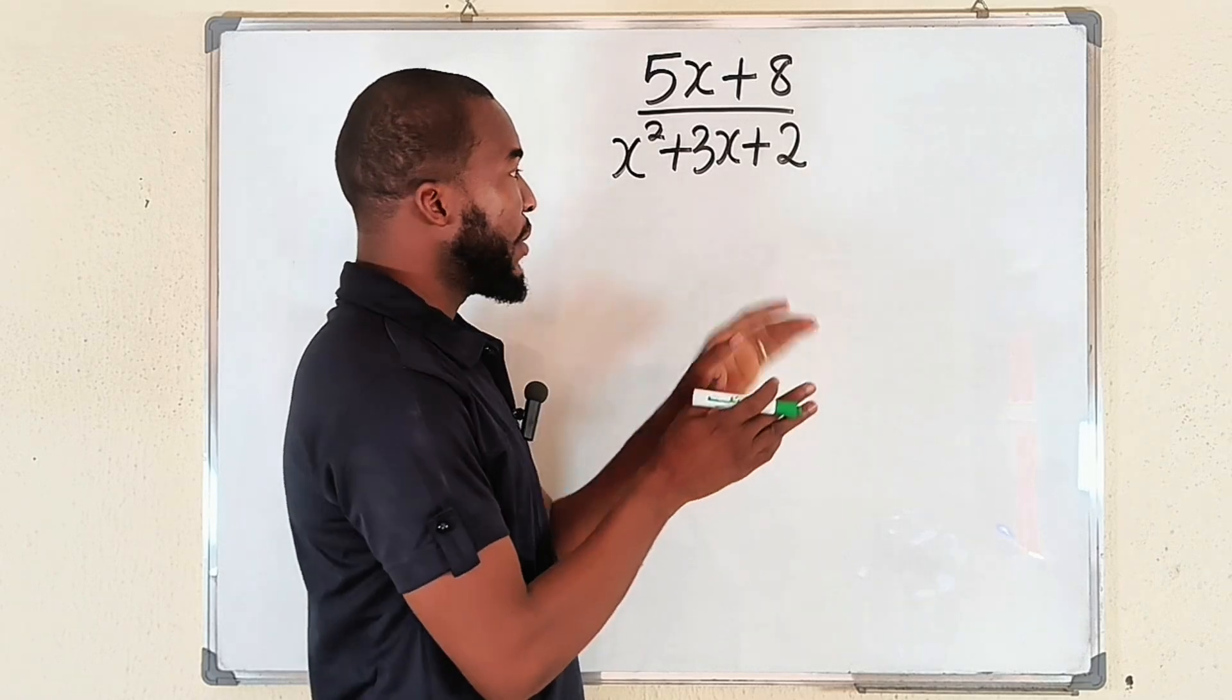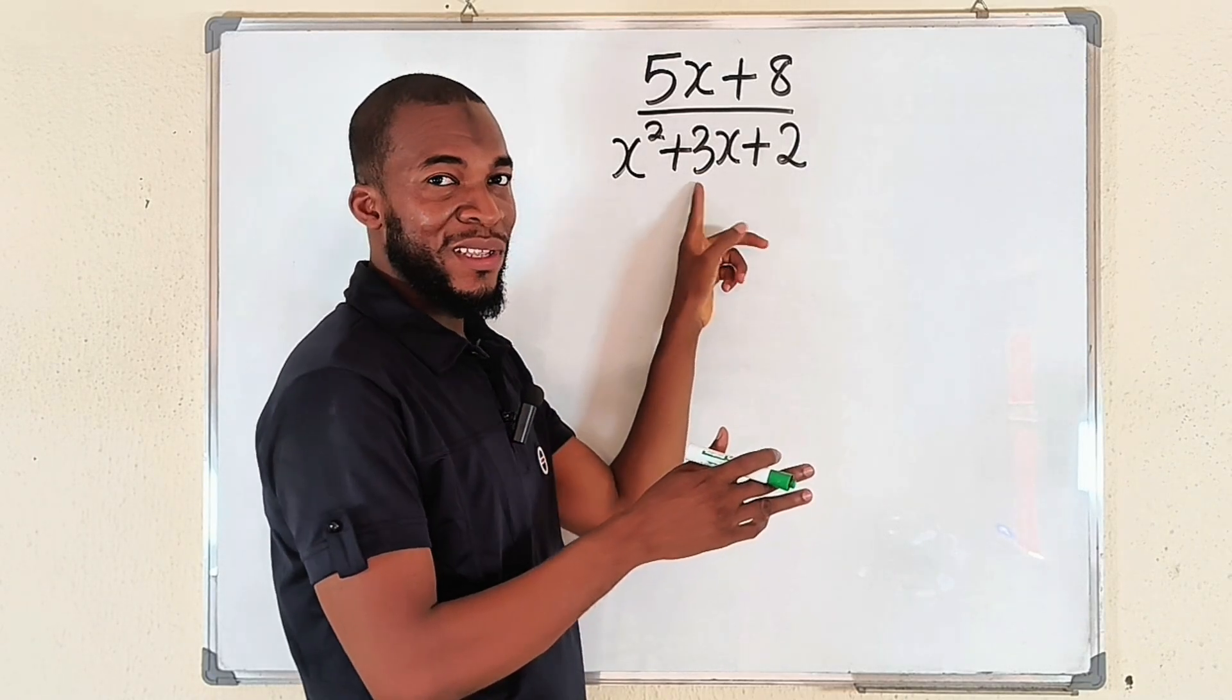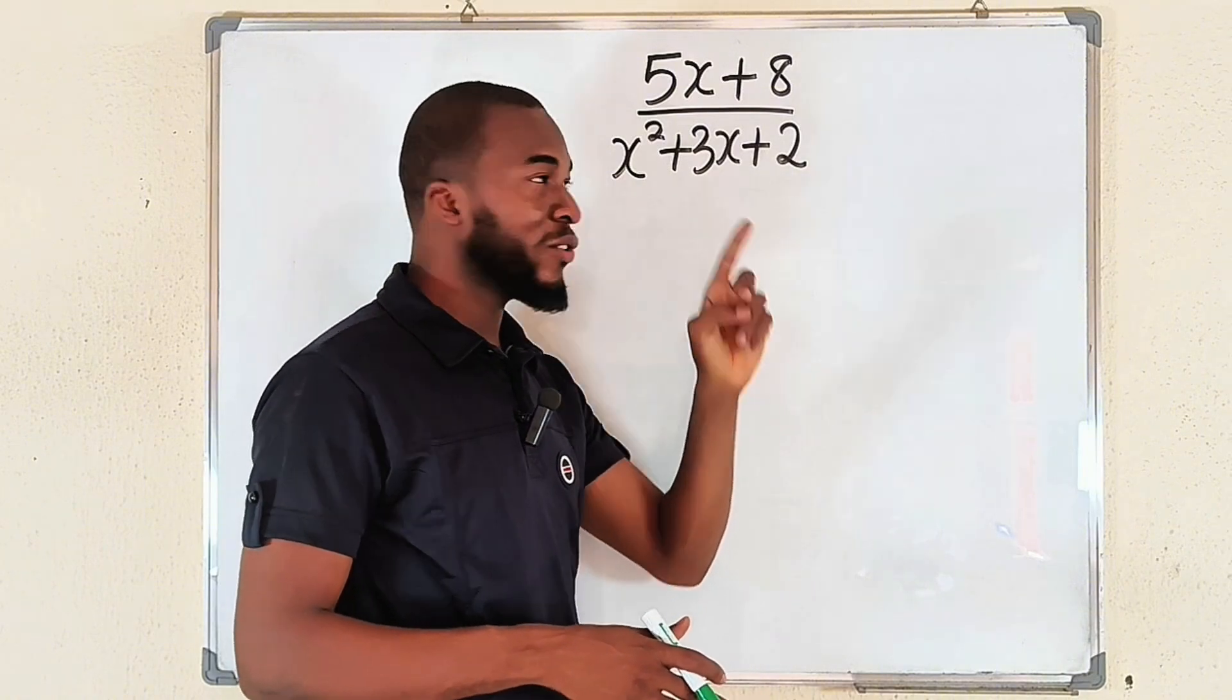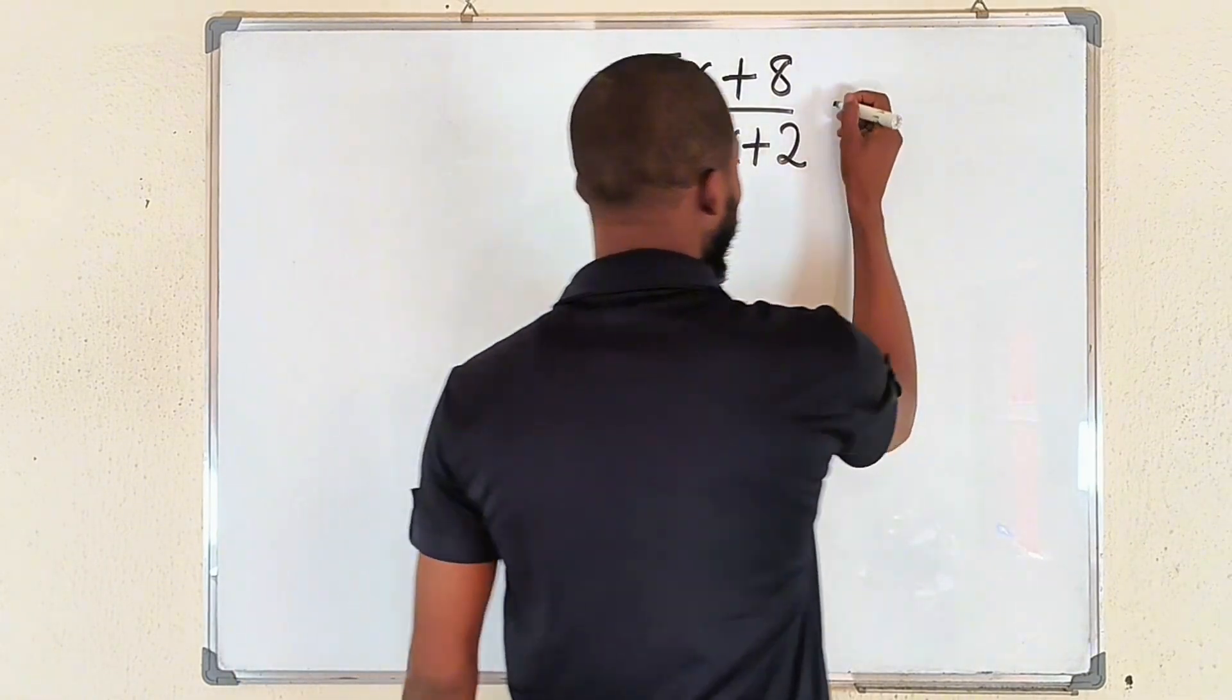The numbers are 1 and 2. 1 times 2 is 2, 1 plus 2 is 3. So we can resolve it into 5x plus 8 divided by the two factors.